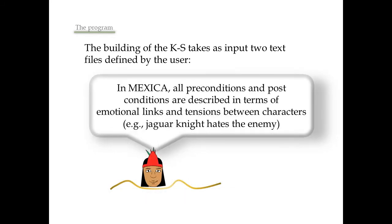In Mexica, all preconditions and post-conditions are described in terms of emotional links and tensions between characters. This is a unique characteristic of the system. An example of emotional link is Jaguar Knight hates the enemy.